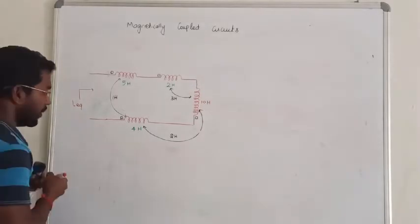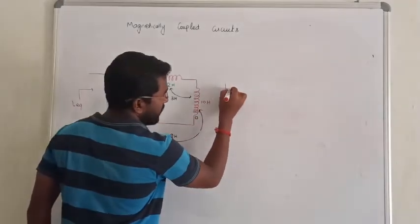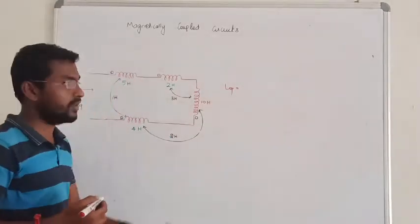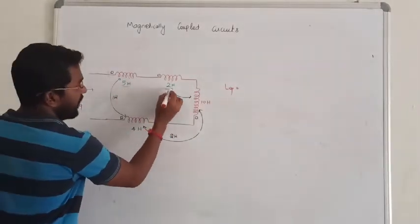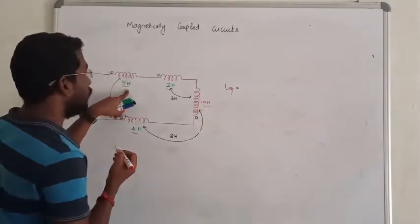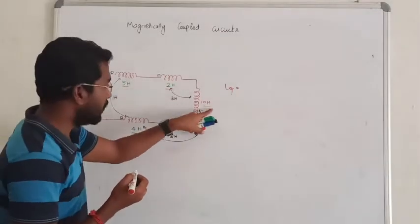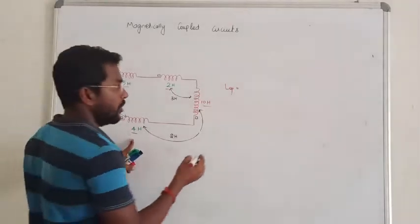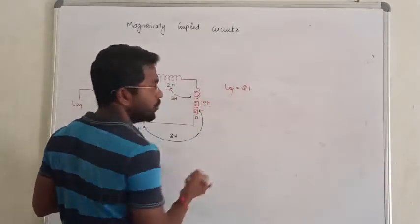So, let us see the element. Very simple. You can solve it within 10 to 30 seconds. L is equal to zero, faster. The self-inductance is all of them. Self-inductance is 5 plus 2 is 7. 7 plus 7 is 17. 17 plus 4 is 21. So, the total self-inductance is 21.